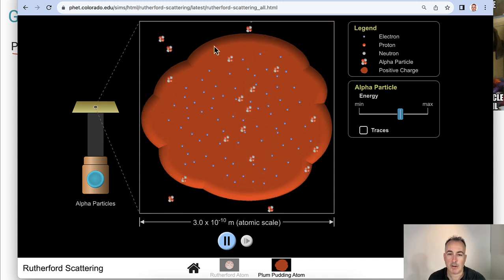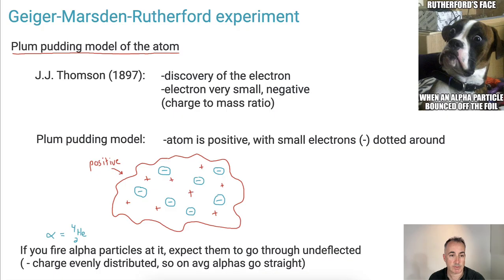So their experiment was to fire exactly this, alpha particles at a thin, thin sheet of gold. Very, very thin sheet of gold. And these are fairly massive particles here. So they expected them to just go right through. Well, let's see what actually happened.